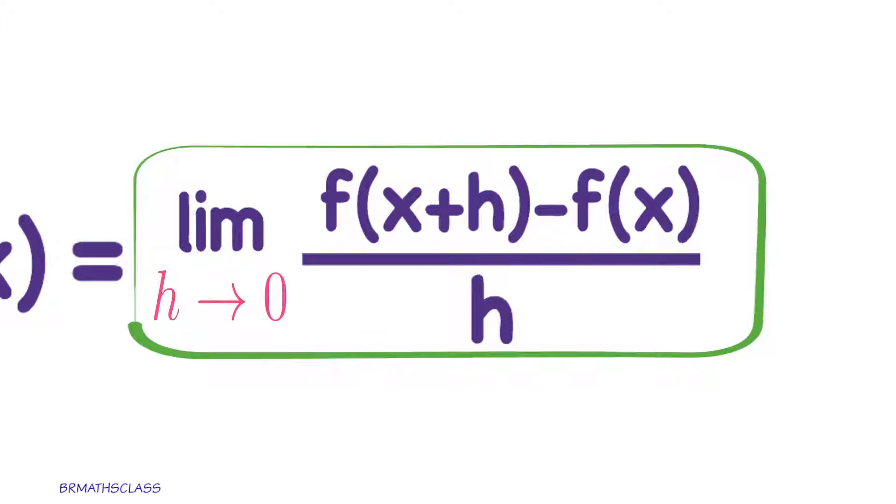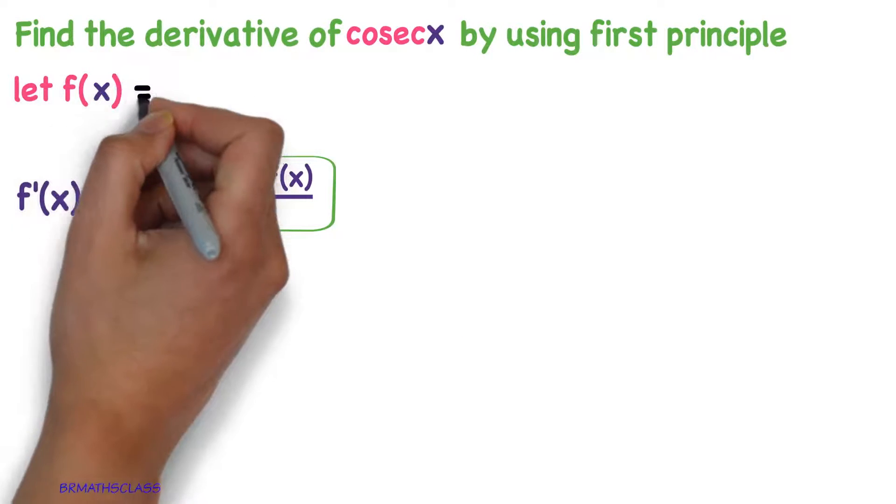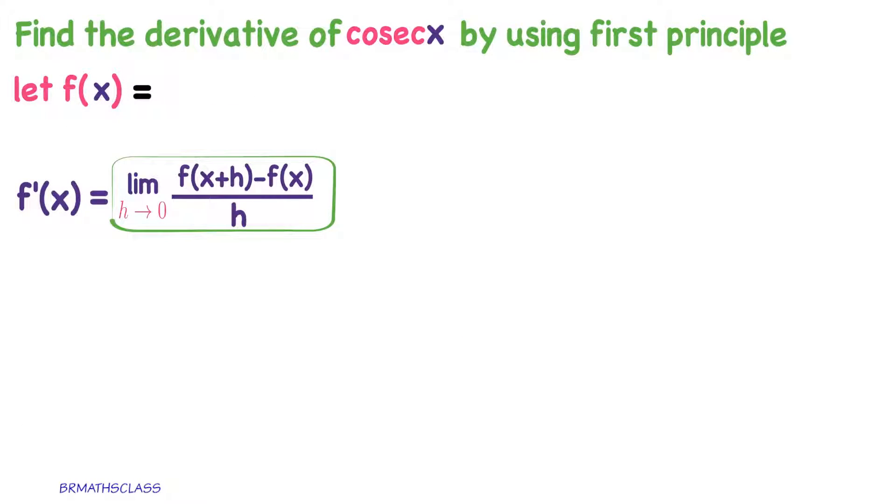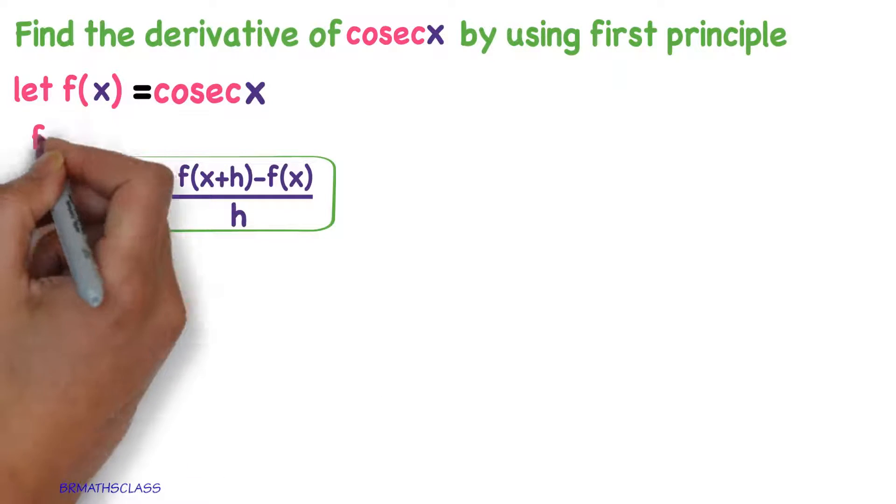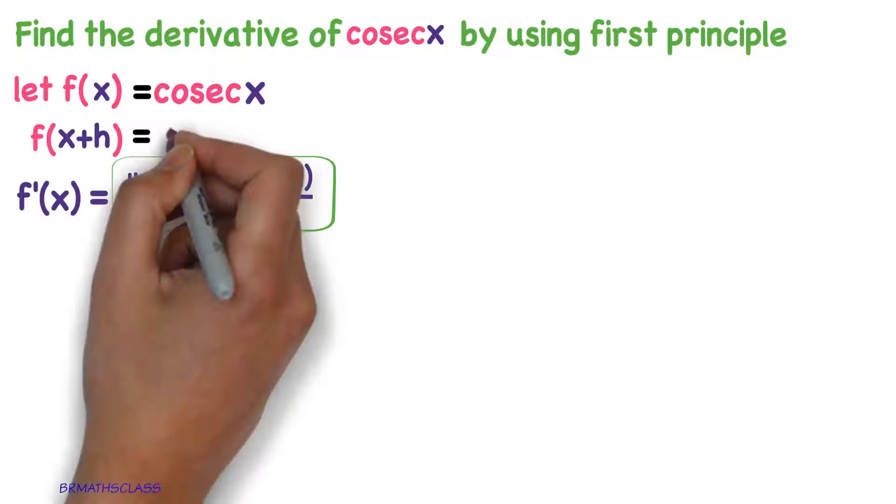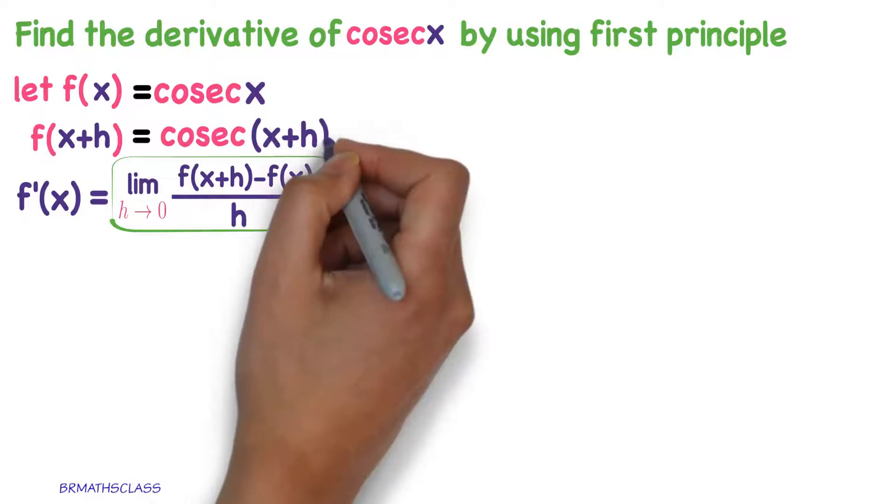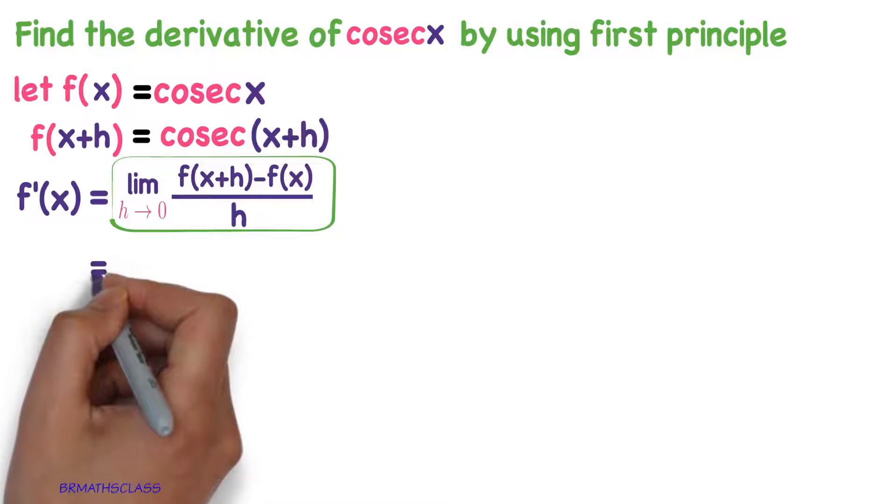Now, which function derivative you want to find, you take that function as f of x. What is f of x? f of x is cosecant x. We need f of x plus h. What is f of x plus h? Cosecant of, see, x is replaced with x plus h. What is f of x plus h? It is cosecant of x plus h. Now, you apply these two here.